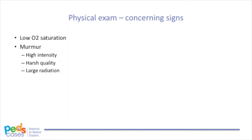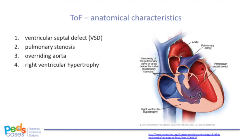Altogether, Josh's associated symptoms — the cyanotic episodes and abnormal vital signs, including low oxygen saturation — as well as features of the murmur, such as harsh quality, high intensity, and large radiation, should point you towards a pathological murmur rather than an innocent murmur.